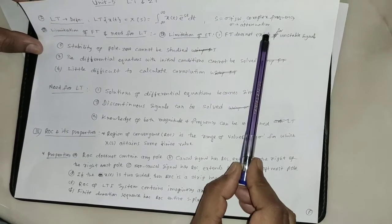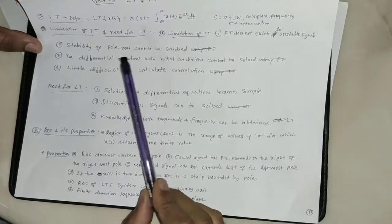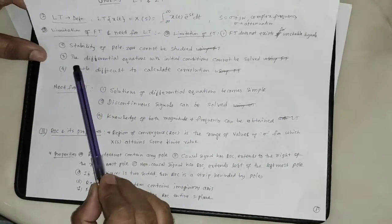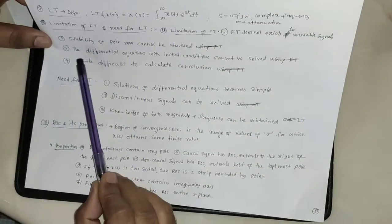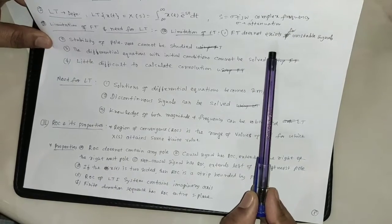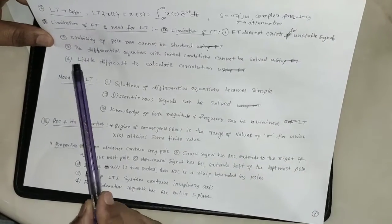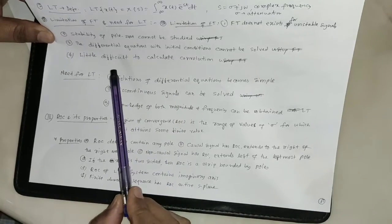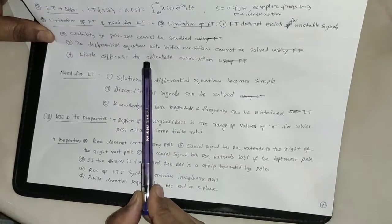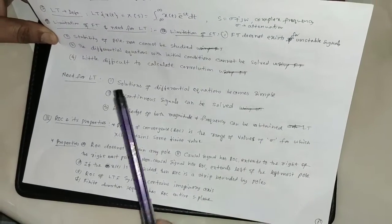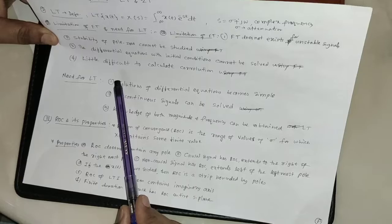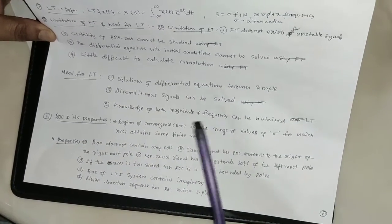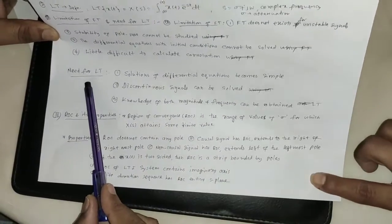Sigma is the attenuation constant. There are some limitations of Fourier transform. First, FT does not exist for unstable signals. Second, stability of pole-zero cannot be studied. Third, differential equations with initial conditions cannot be solved. It is also a little difficult to calculate convolution. So there is some necessity of Laplace transform.